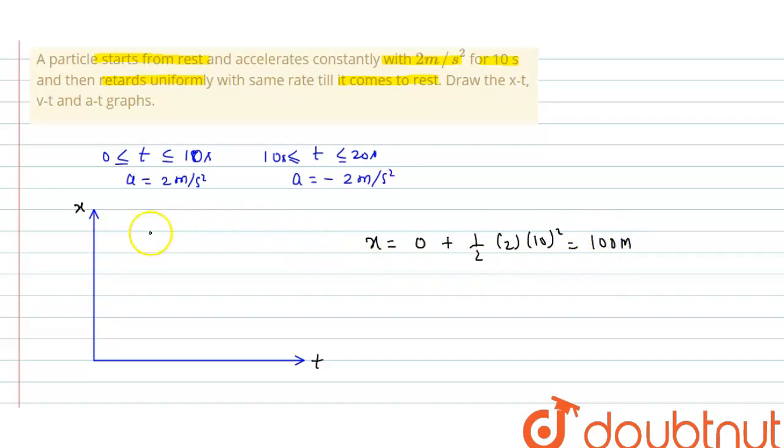So first 100 meters it will accelerate, and the next 100 meters it will retard. The graph should be a curve because it is accelerated motion, really a parabola.